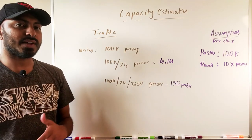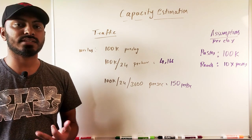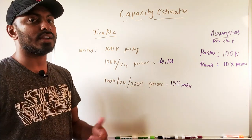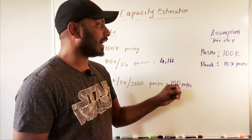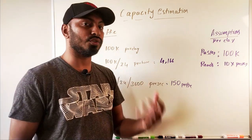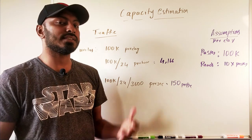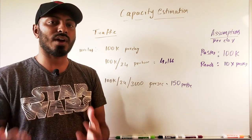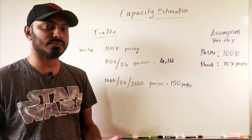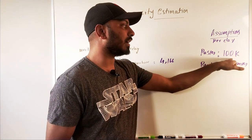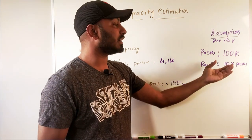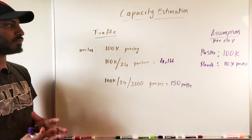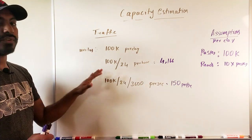Now let's understand capacity estimation. There are three things: traffic, data estimation, and network estimation. We need to make assumptions. Let's assume there will be 100K users per day creating new pastes. The system is read-heavy — once I paste content, I might access that link often or share it. So if 100K writes happen, there could be 10 reads per write on average, meaning 1 million reads per day.